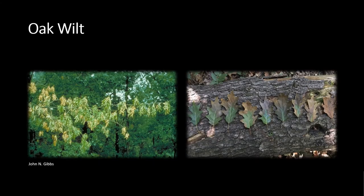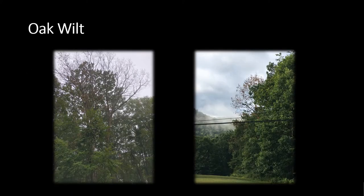Symptoms of oak wilt are shown here in the slide. The main indicators include rapid wilting and leaf discoloration from the tips. These symptoms are generally observed from June to early July. Trees will drop leaves rapidly as the infection progresses. It is common for affected trees to drop the majority of their leaves within a few weeks from infection. Here are two good examples of oak wilt defoliation weeks after infection.